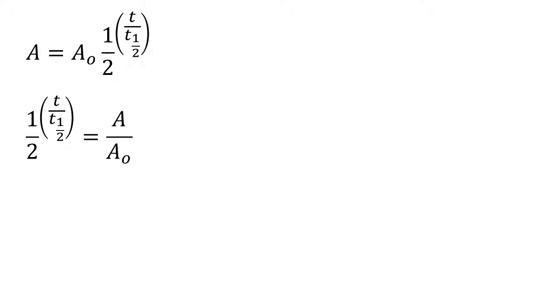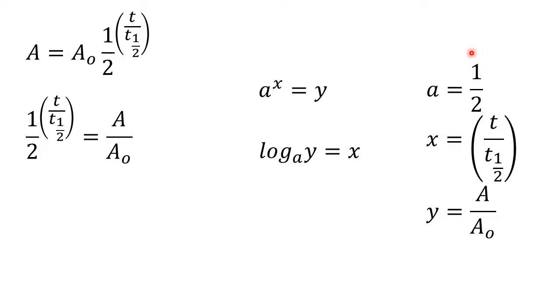Let's go ahead and divide A0 over to the other side, and then I just rearranged these so that you could see very clearly a mathematical rule. Remember the rule that a to the x is equal to y. If a to the x is equal to y, then the log base a of y is equal to x. So if I say that a is one half, here's the x, is equal to y, here's y. So y is equal to A over A0, x is equal to t over the half-life, a is equal to one half. Then I can rearrange that and I'll get the log base one half of A over A0 is equal to the time over the half-life.